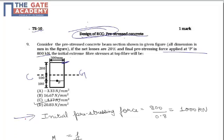It is very clear that initial pre-stressing force will be given by 800 upon 0.8, taking that there is a loss of 20% from 800 to 1000. That is why this 0.8 is coming. Initial pre-stressing force has to be greater than final pre-stressing force. It comes out as 1000 kN.